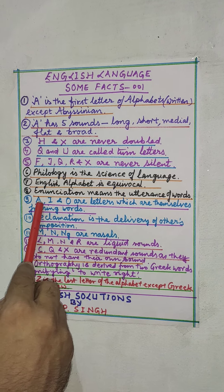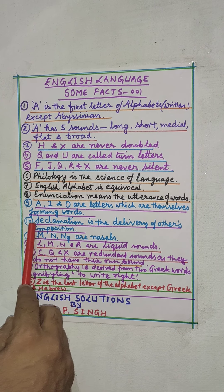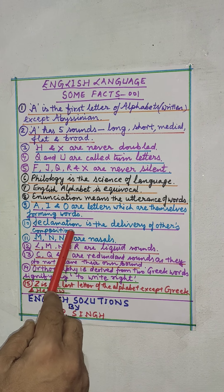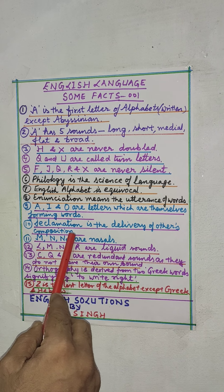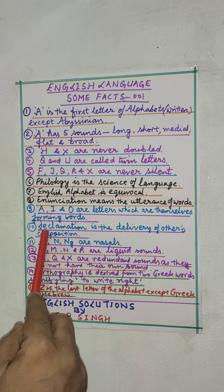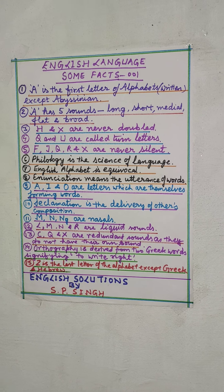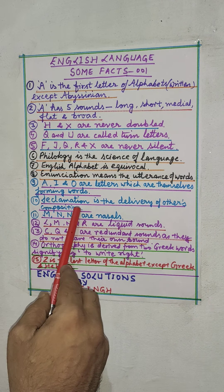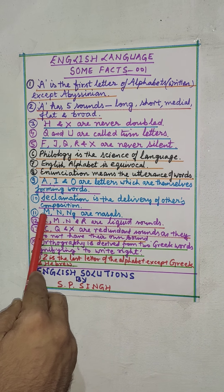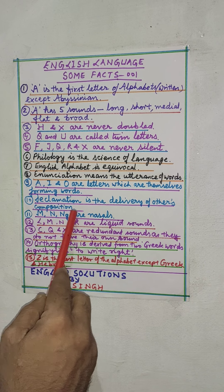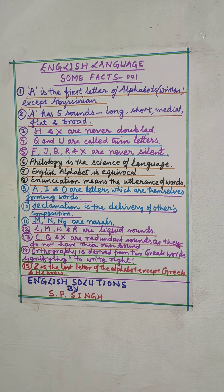Declamation is the delivery of others' composition — you have to bear that in mind. The next point is that M, N, and NG are nasals, and these are pronounced through the nasal passage.